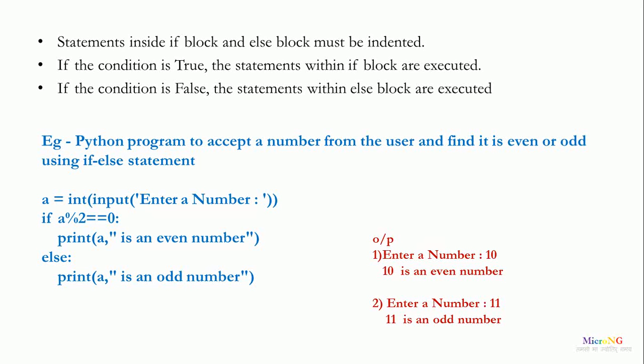The input method reads data from the user, and typecasting converts the string value into a corresponding integer, stored in variable a. The value of a is checked for divisibility by 2 using the modulus operator. If the remainder after division by 2 equals 0, the number is completely divisible by 2 and is printed as an even number; otherwise, it is printed as an odd number in the else block. For example, if the number entered is 10, it prints 'even number'; if 11, it prints 'odd number'. Either the if block or the else block is executed depending on the result of the condition.